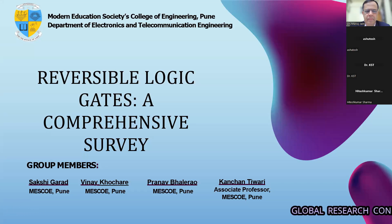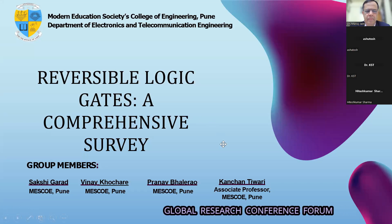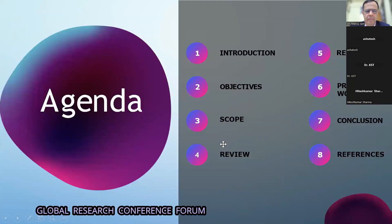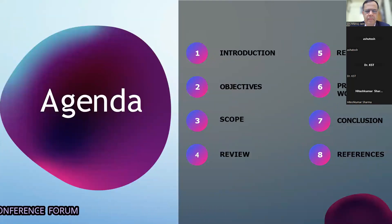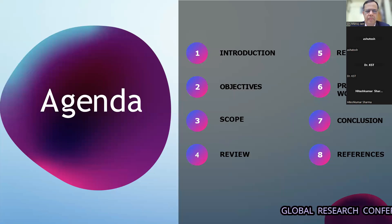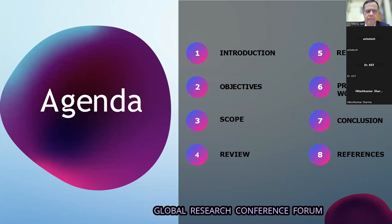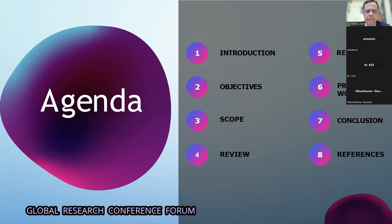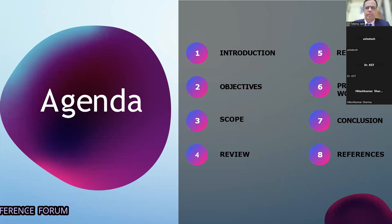Let us now see the flow of the presentation. First, we will start with the introduction to the problem statement, which will be followed by the objectives and scope of this project. In the end, we will have our proposed work in this field with the conclusion and the test results.